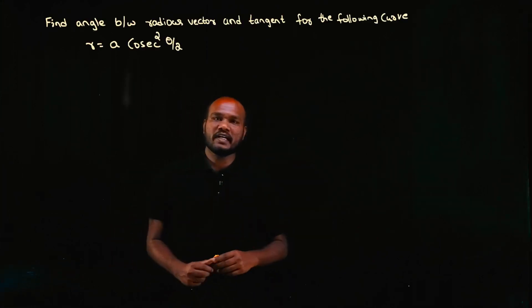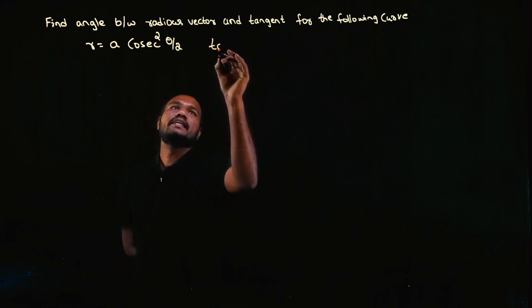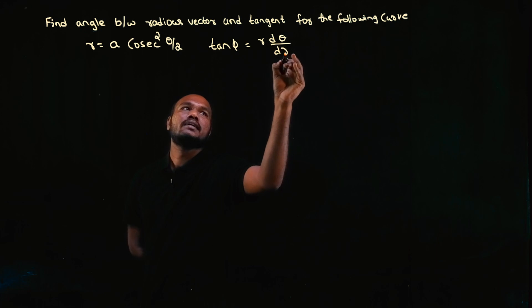What is the next question? Find the angle between radius vector and tangent for the following curve. To do that, what do we need? We need tan φ value, that is r·dθ/dr.